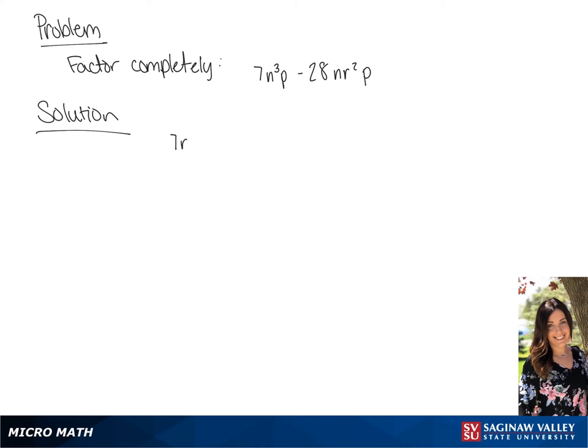We're going to factor 7n cubed p minus 28nr squared p. We have a common factor of 7np, so we are going to pull this out.